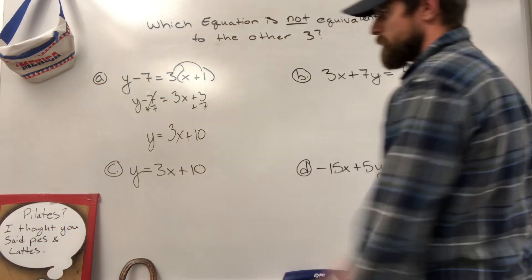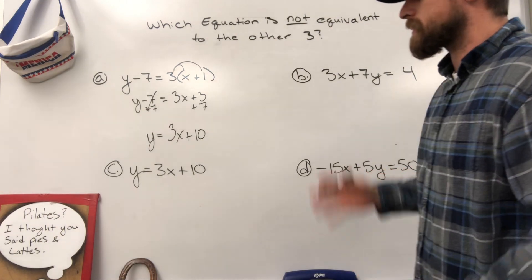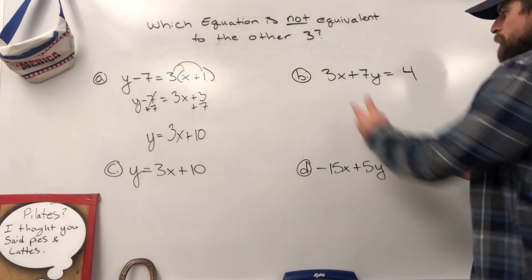A and b are the same. So I'm imagining c or d, one of these two is not going to be the same as the other three. Let's go over to c.